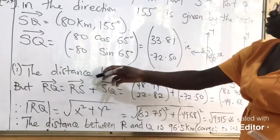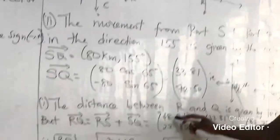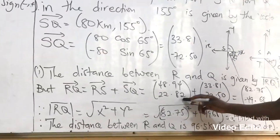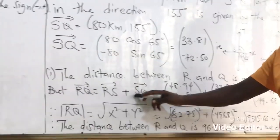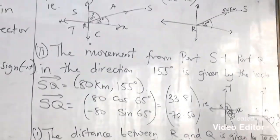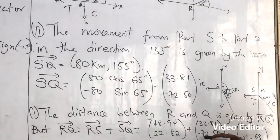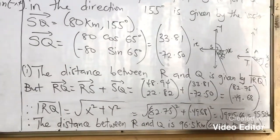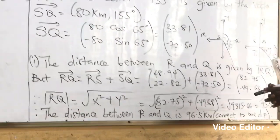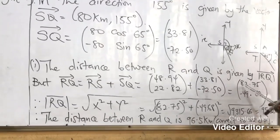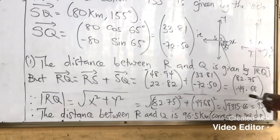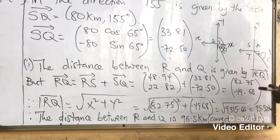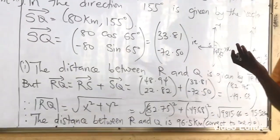We already know our vector RS as 48.94 and 22.82. And we also know our vector SQ as 33.81 and negative 72.50. Adding them together, we are getting 82.75 and negative 49.68.